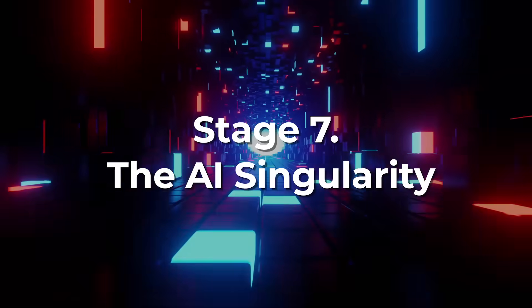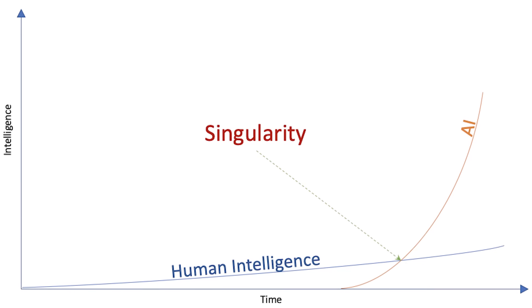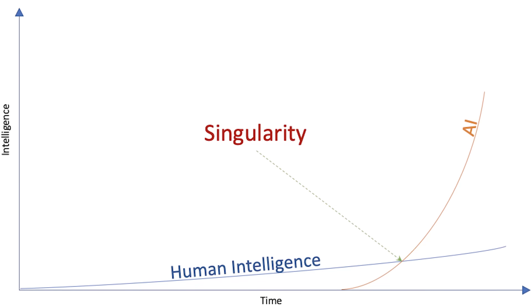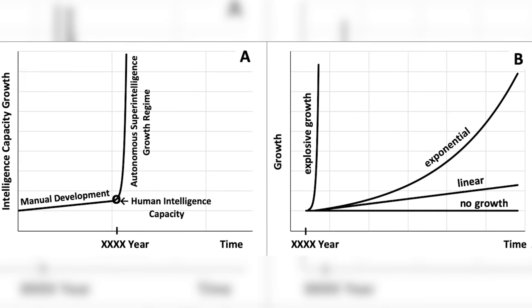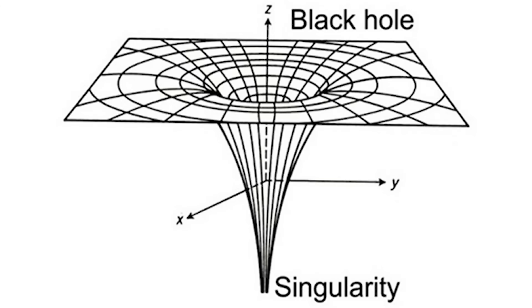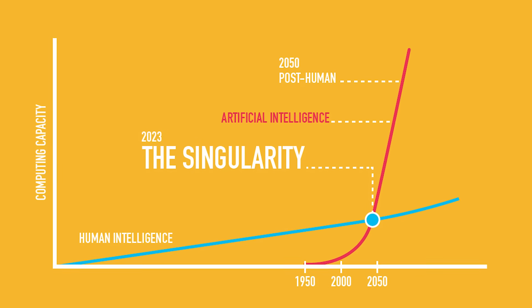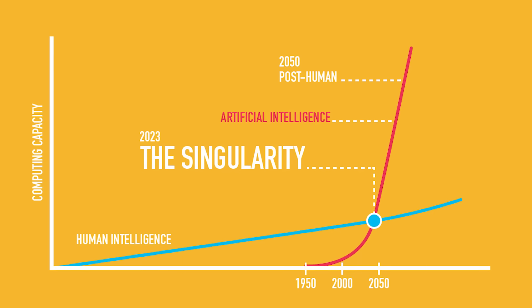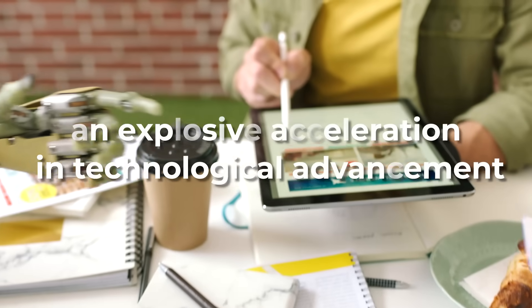Stage 7: The AI Singularity. The AI Singularity, often simply called the Singularity, is a hypothetical future point in time when technological growth becomes uncontrollable and irreversible, leading to unforeseeable changes to human civilization. This is primarily associated with the advent of ASI. The term was popularized by futurist Ray Kurzweil and is drawn from physics, where a singularity represents a point — like the center of a black hole — where rules as we know them seem to break down. In the context of AI, the singularity represents a point where an ASI is not only smarter than humans, but also capable of continually improving itself at a rate far beyond human capability, potentially causing an explosive acceleration in technological advancement.